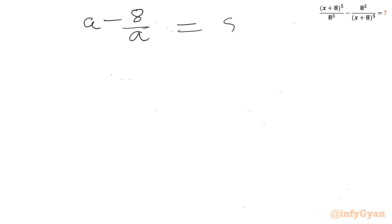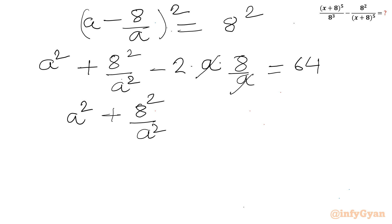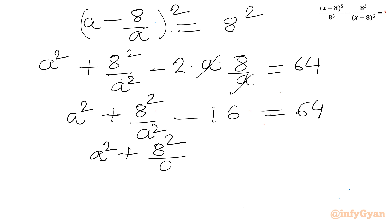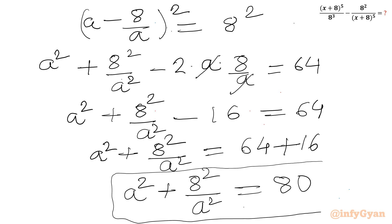Starting from a minus 8 over a equal to 8, I will square both sides. This gives a squared plus 8 squared over a squared minus 2 times a times 8 over a equal to 64. The a's cancel in the cross term, so a squared plus 8 squared over a squared minus 16 equal to 64, giving a squared plus 8 squared over a squared equal to 80. Let us call this equation 1.